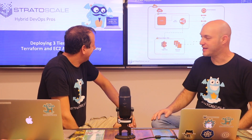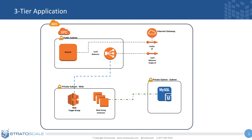We have a three-tier application template and we're going to run WordPress on that specific template. The three tiers are: the public-facing tier, which has the load balancer and what's called the Bastion — we'll discuss that later. We have the private subnet, which hosts everything private — the web-facing and application tier.